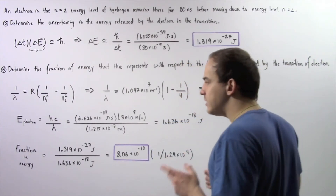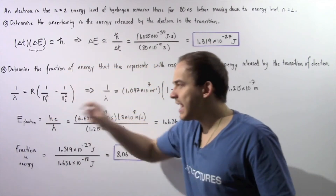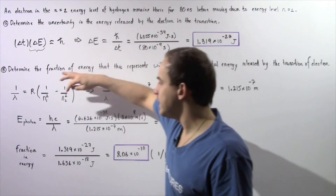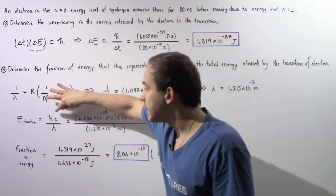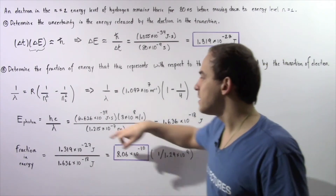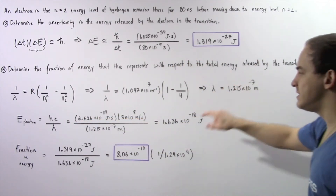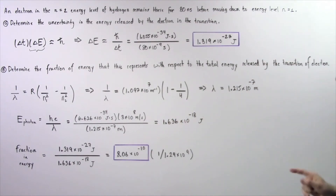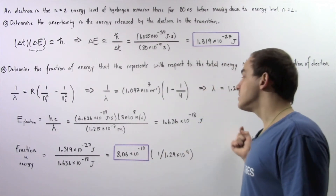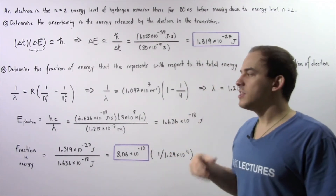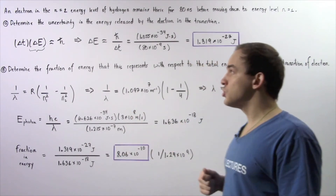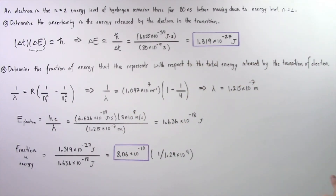Now we use the equation E equals hc divided by lambda, where h is Planck's constant and c is the speed of light in a vacuum, divided by our wavelength. This gives us 1.636 times 10 to the negative 18 joules. This is the quantity of energy released when the electron transitions from the n equals 2 energy level to n equals 1.